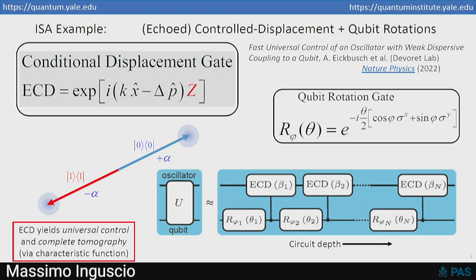And also, it turns out, I'll skip the details, but this echo-controlled displacement allows you to do complete state tomography via the characteristic function, by measuring the overlap of the oscillator state with a displaced version of itself, and mapping that information back onto the qubit.